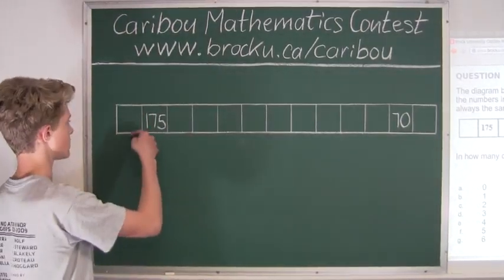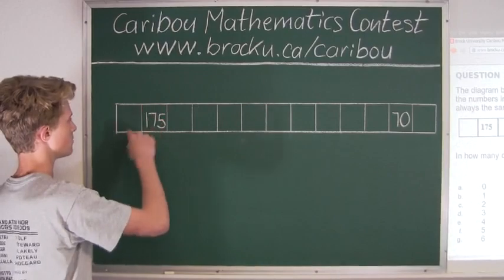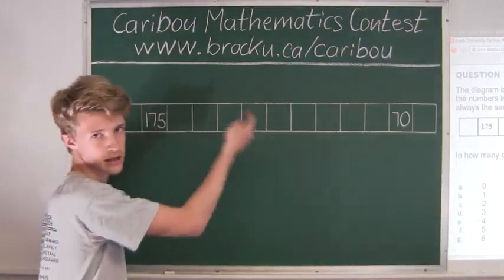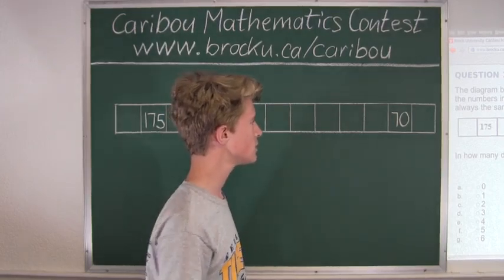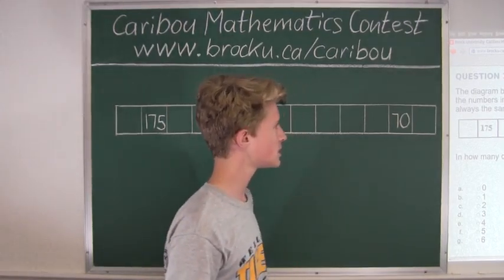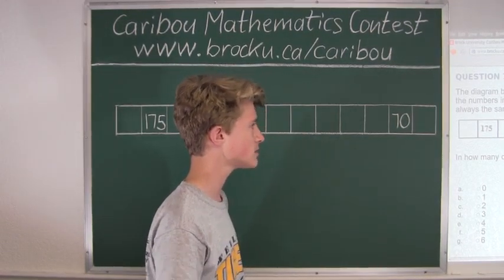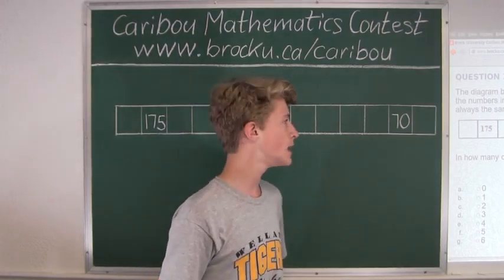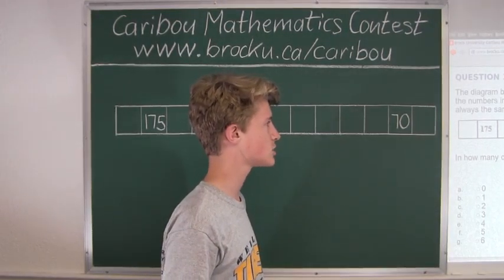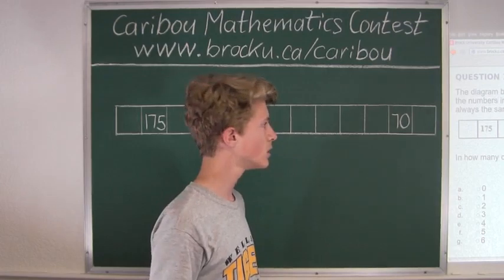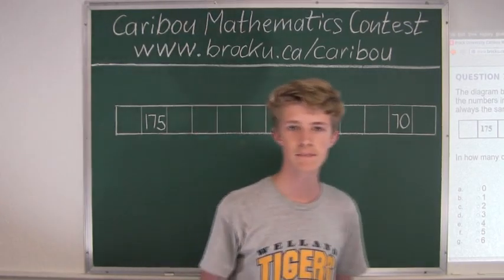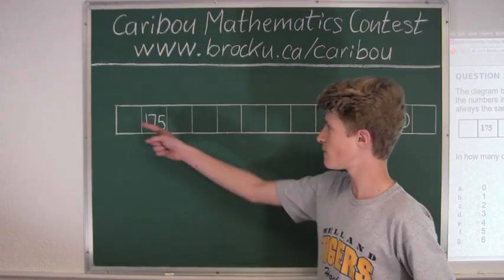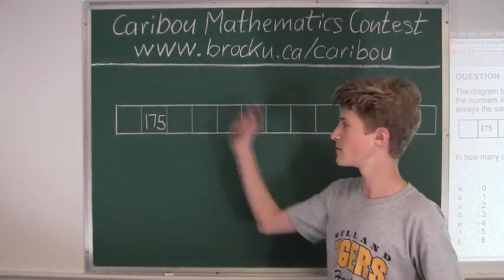So for example, the sum of these 3 boxes must be the same as these 3, and so on. We will keep the first condition in mind for later, which is the total of the numbers in the 13 boxes is 2005. And we will keep the second condition in our head for now, which is the sum of any 3 consecutive boxes is always the same. So let's start at the farthest left box of the diagram.